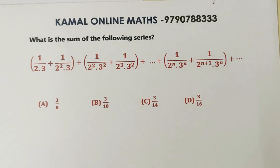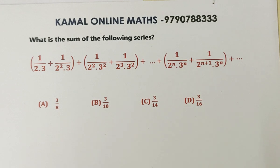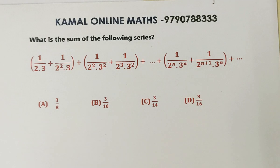First question: What is the sum of the following series? The series is 1/(2·3) + 1/(2²·3) + 1/(2²·3²) + ... The nth term is 1/(2ⁿ·3ⁿ) + 1/(2^(n+1)·3ⁿ) + etc., up to infinity. Find the sum of this infinite series.